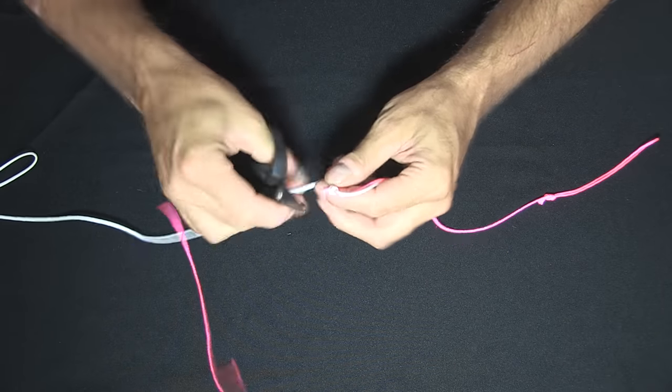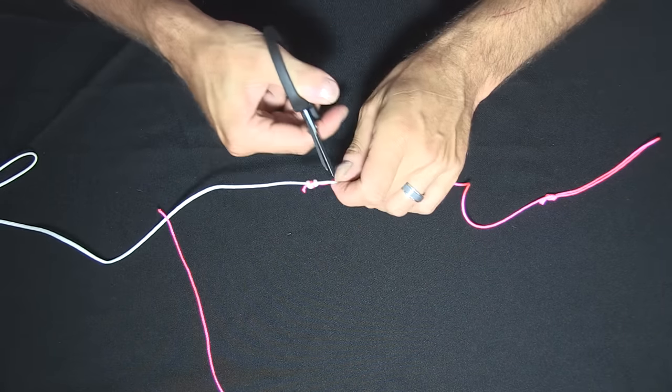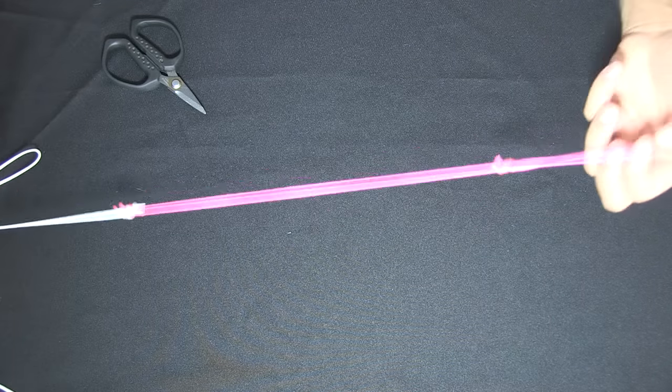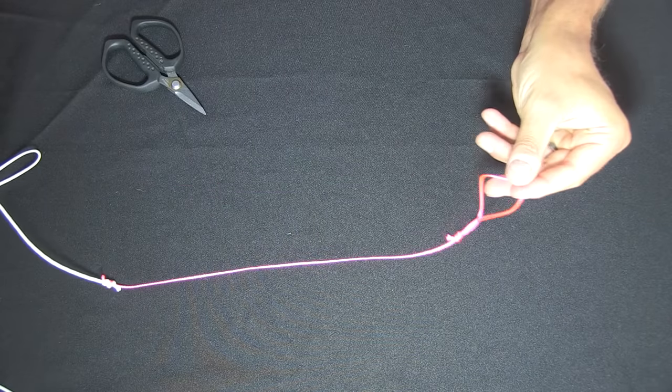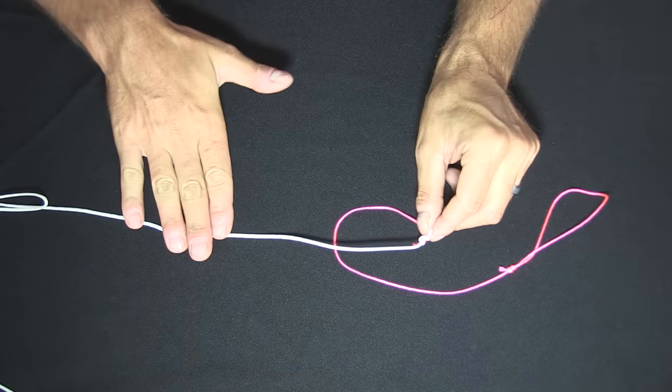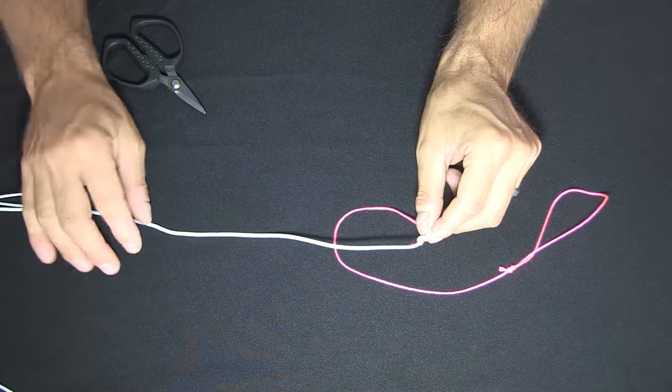Cut your tag ends off. And there we have a sinker breakaway. So if the sinker does get caught up now then it will break here and not on your Paternoster Rig or your main line.